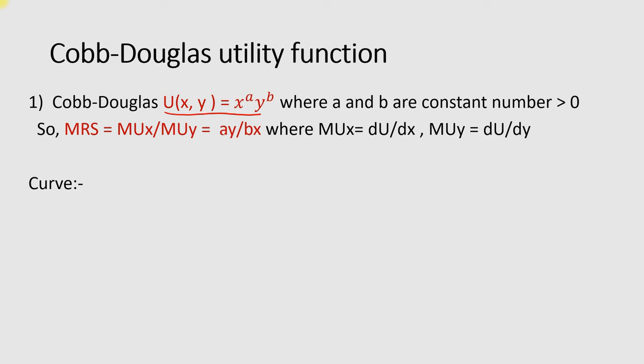An example of a Cobb-Douglas utility function can be, for example, utility where x is 0.5 and y is 0.5, and also where x is 1 and y is 1. The function will look like this. To plot a Cobb-Douglas utility function on a graph, we first have to understand the marginal rate of substitution in the case of the Cobb-Douglas utility function.